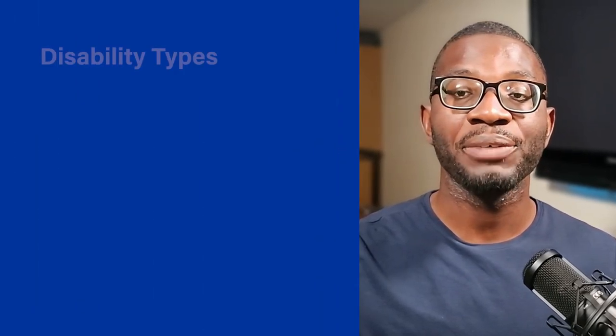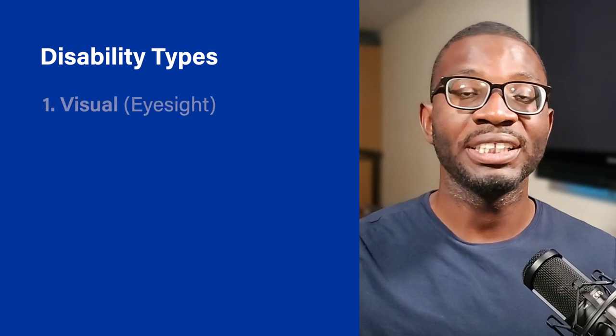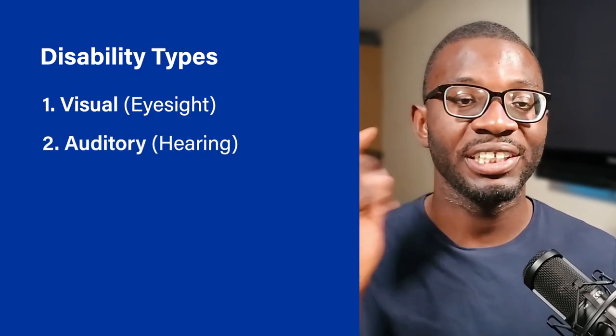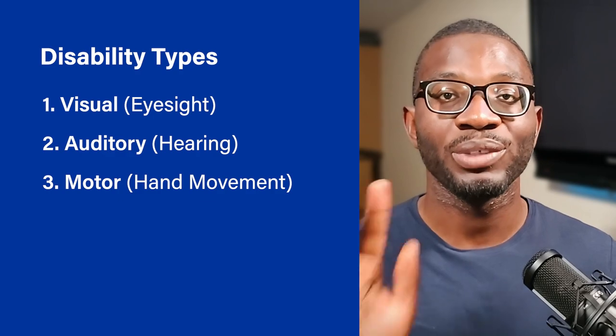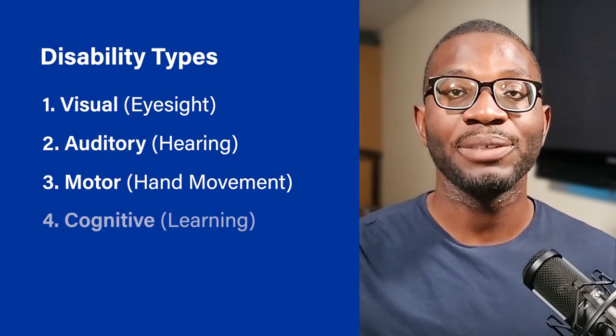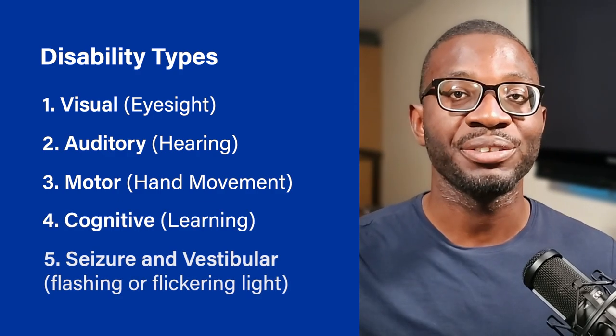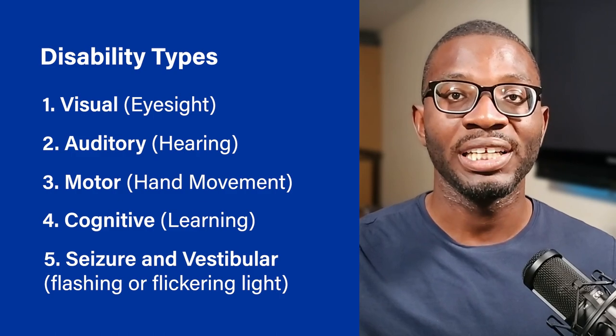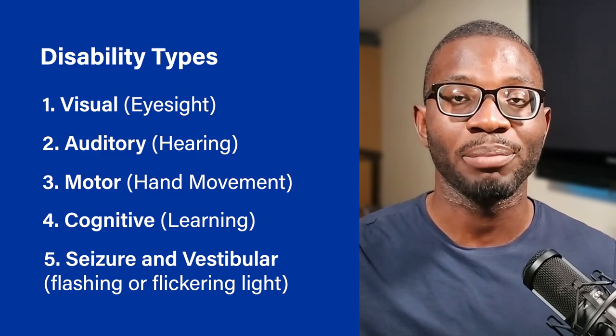Our goal as web designers is to create websites that are accessible to all regardless of their disabilities. Let's talk about the different types of disabilities that can be relevant to web design. These disabilities can be grouped into five different categories: visual (eyes), auditory (ears), motor (hands), cognitive (brain), and seizure, which relates to the eyes and how we interact with blinking lights.